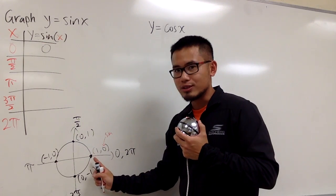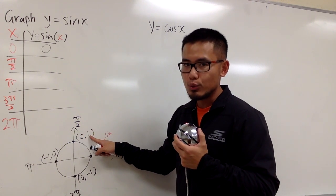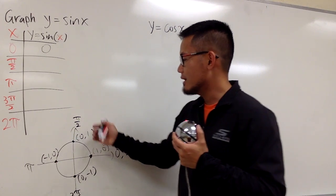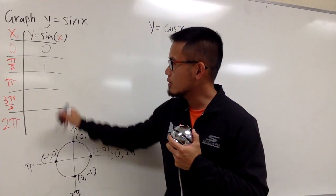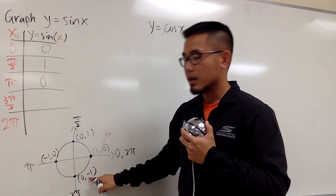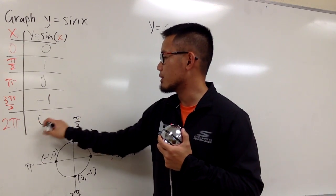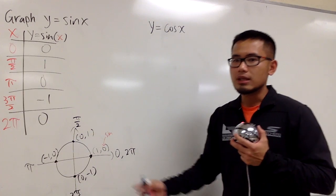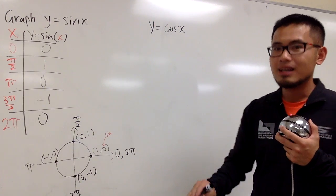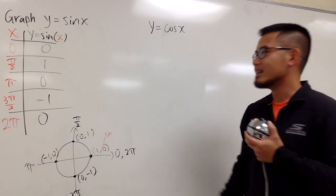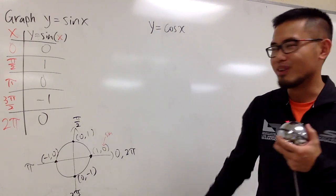Continue running around the circle. Sin of pi is 0. Sin of 3 pi over 2 is negative 1. And when we come back to 2 pi, we once again get 0. These four points tell you the maximum, the zeros, and the minimum for sine and cosine. Once we connect the dots, you have to make a wave — that's all.